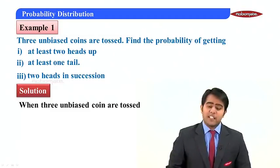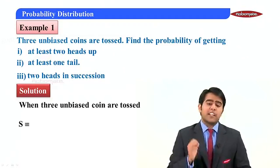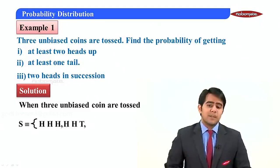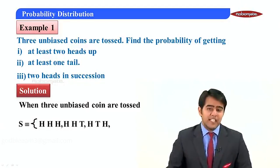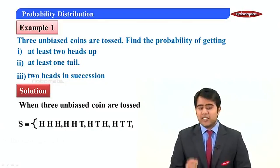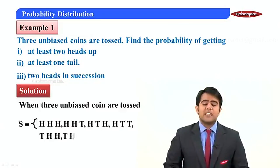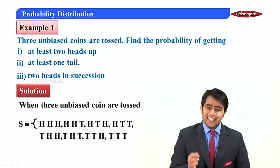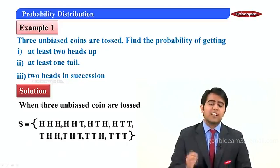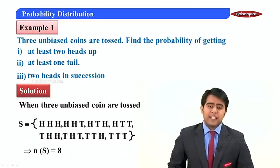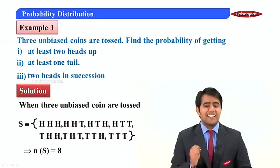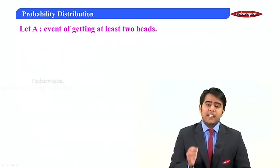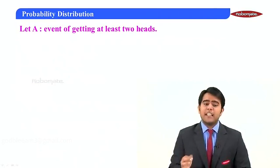When three unbiased coins are tossed, we write the sample space first. The sample space is: HHH, HHT, HTH, HTT, THH, THT, TTH, TTT. This is the required sample space, so n(S) = 8.